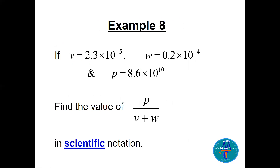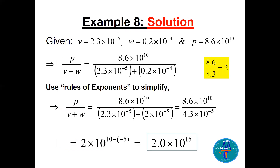Here's a nice question: V, W, and P are all given in scientific notation. Find the value of P divided by (V plus W), and give the answer in scientific notation. Please try this — take one or two minutes on a piece of paper, then compare with the next slide. The answer is 2.0 times 10 to the power 15.